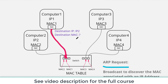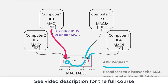An ARP request is generated by the source computer and it is a layer two Ethernet broadcast used to discover the MAC address associated with a particular IP. Essentially, computer one sends out a layer two broadcast which hits the switch, basically saying: I need to send an Ethernet frame to the computer that owns this IP address — please tell me your MAC address. Because it's a broadcast, it is flooded out every single port on the switch.